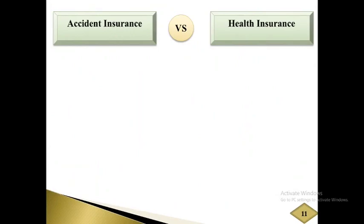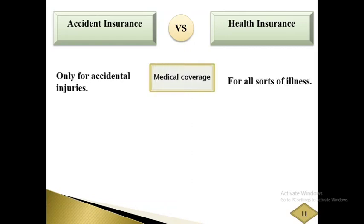At first glance, a health insurance policy and a personal accident policy may seem similar because both are concerned with the human body. But there are some differences between accident insurance and health insurance. The first point of difference is medical coverage. In case of accident insurance, medical coverage is provided only for accidental injuries. On the other hand, in case of health insurance, medical coverage is provided for all sorts of illness, including accident.